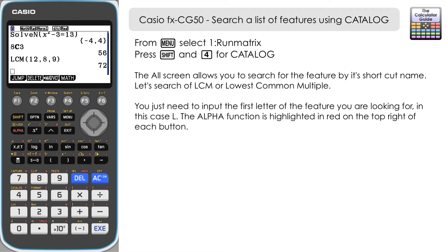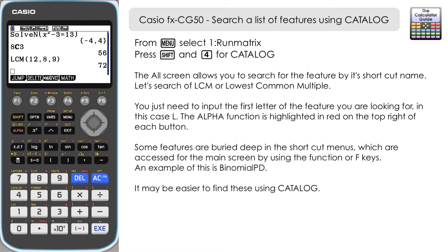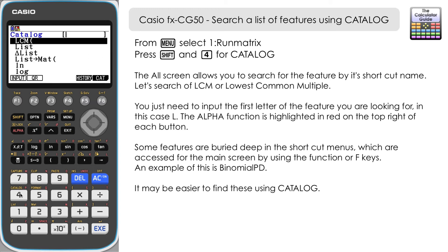I'm not sure off the top of my head which shortcut menu LCM is in, but I know that if I go to catalogue and press L I can quickly get what I wanted, which was the lowest common multiple. Let's try that one more time with one more feature — let's go for Binomial Probability Distribution, and I'll show you how layered that is in the shortcut menu.